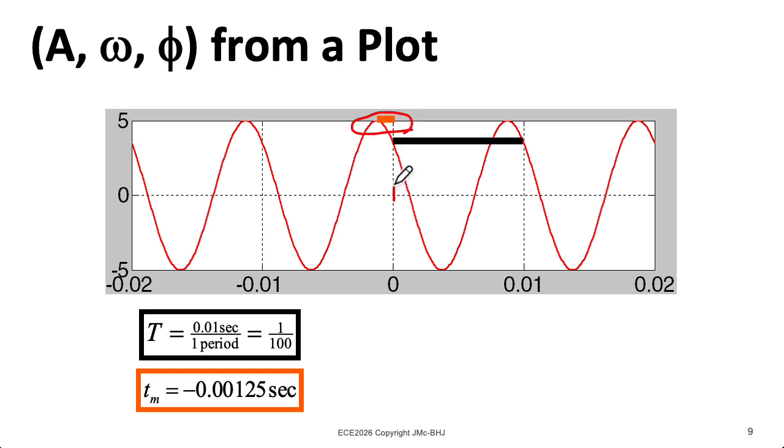But if we pick the peak that's closest to the origin here, then I'll naturally wind up with a phase, a phi that's between minus π and π, which is the convention we like to use. So I'm going to pick that one. That avoids me having to add or subtract multiples of 2π later.